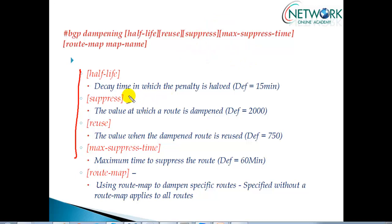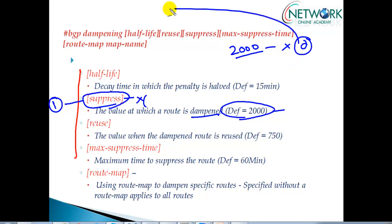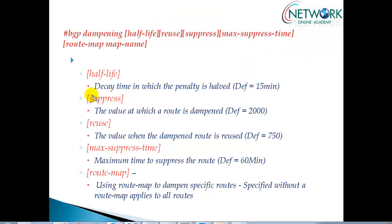There are four different parameters used inside dampening. The first is the suppress value, which defines at what penalty value the route is suppressed — meaning not advertised. The default is 2000, which means if the penalty exceeds 2000, the route will be marked as dampened and no longer advertised to any BGP neighbor, whether internal or external.